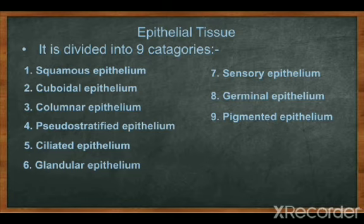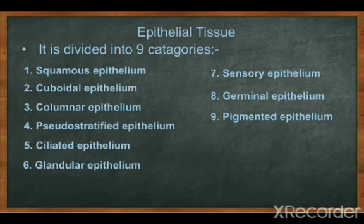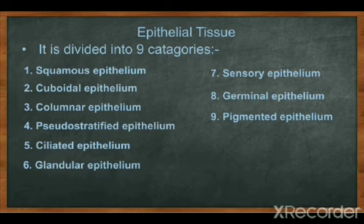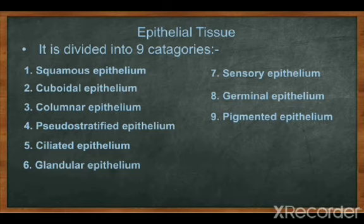Epithelial tissue has different properties. Number one: cells are present end to end without any intercellular space — any space between two cells is called intercellular space. Second: it always rests upon a non-cellular membrane sheet, a gelatinous sheet called the basement membrane, which is basically made up of polysaccharides. On that, the epithelial tissue is present.